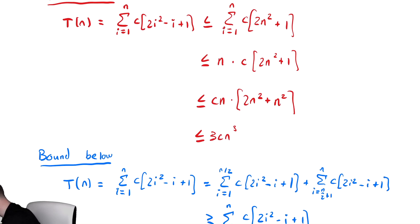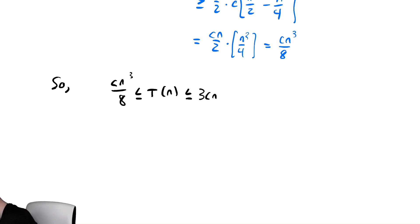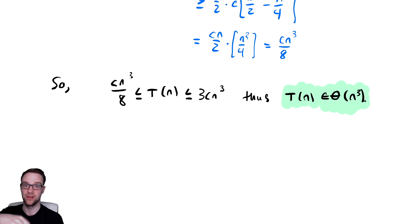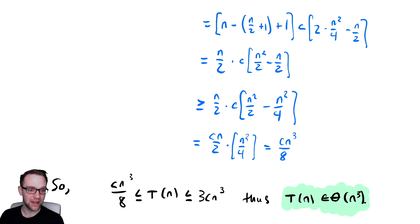So it's bounded above by 3cn³ and below by cn³/8, so it is in Θ(n³). We have that cn³/8 ≤ T(n) ≤ 3cn³, thus T(n) is in Θ(n³) — bounded above and below by a constant times n³. Notice we got a little bit lazy here and didn't specifically comment on the size that n needs to be. We're not going to be so nitpicky about that n₀ value from our definition of theta — we're going to start to be a little more lax in our formality there. We assume that you can determine the appropriate n₀ at this point.